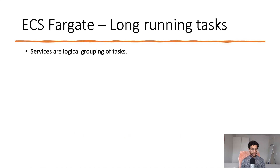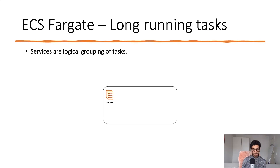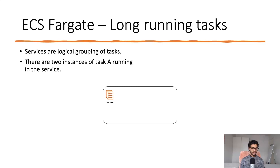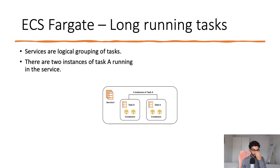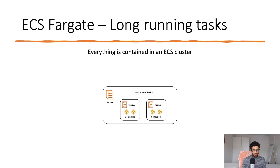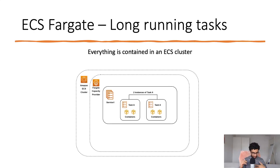You can also use ECS for long-running tasks — for example, if you want to serve an API. For this, you would have something called a service, which is a logical grouping of tasks. You can have two tasks running under a service. A service could be, for example, a development environment, and then you could have another service for a production environment — this would be a way to separate concerns. And all of this is contained in an ECS cluster.